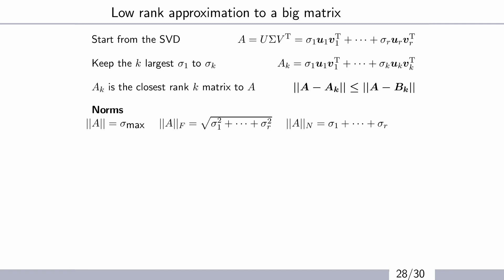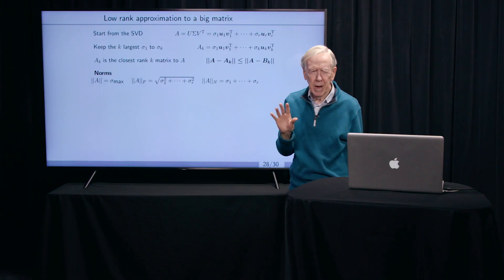Maybe the first k, the k largest ones. And then you've got the matrix that has rank only k, because you're only doing and working with k vectors. And it turns out that's the closest one to the big matrix A.